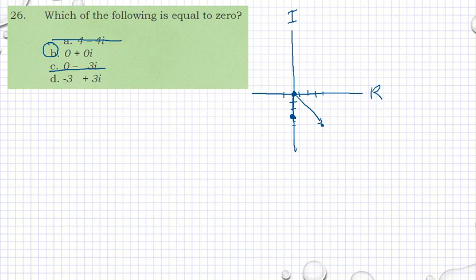And negative 3, 1, 2, 3, and positive 3. And you have still a vector. So you have a resultant. So that is not it also. So the answer should be B.